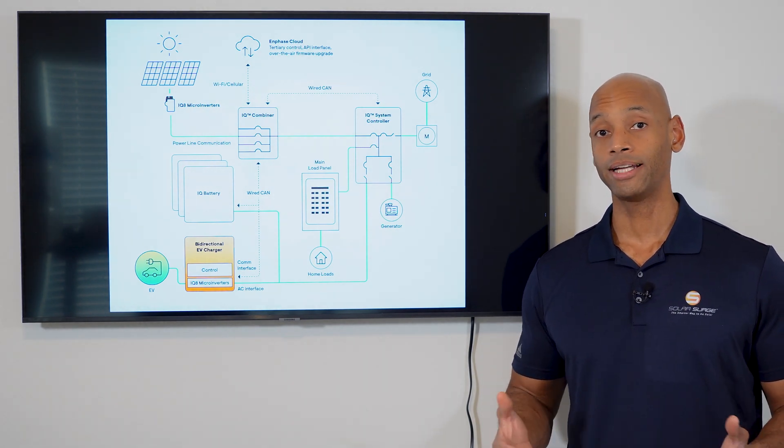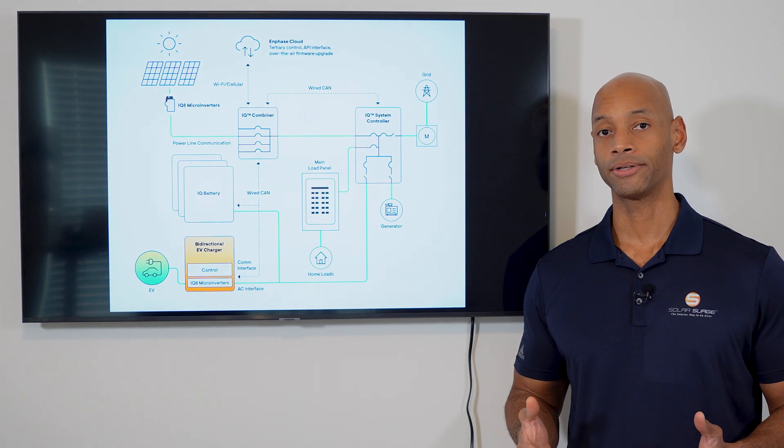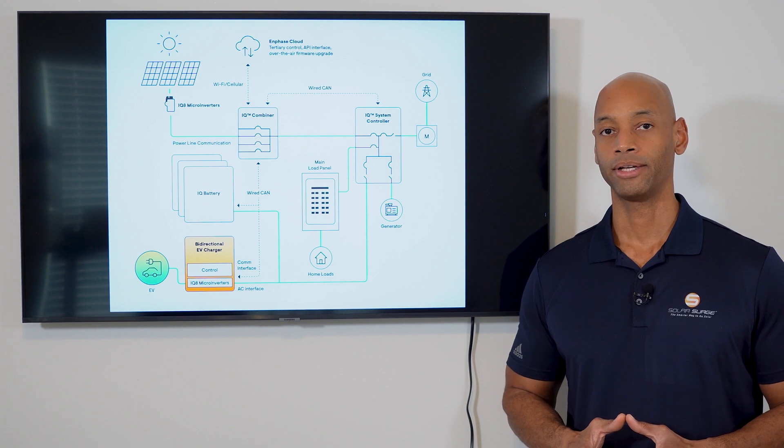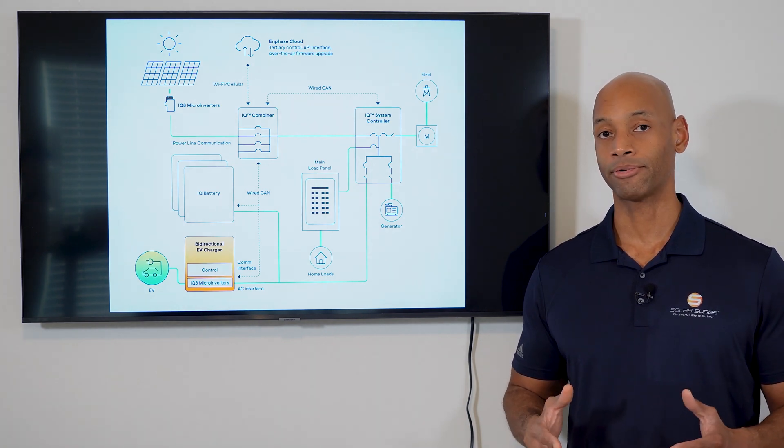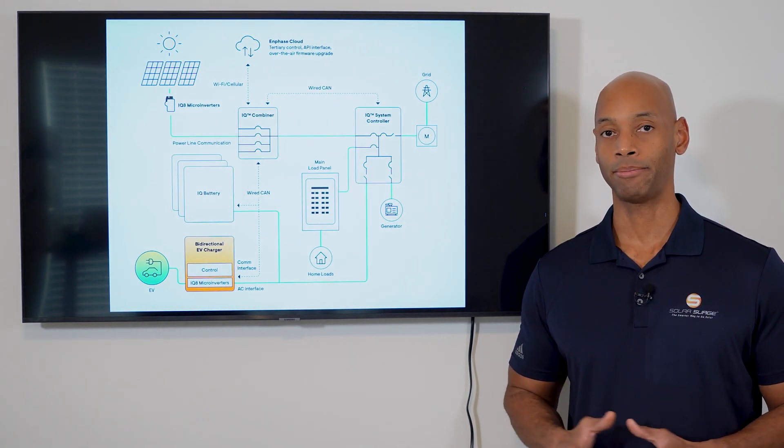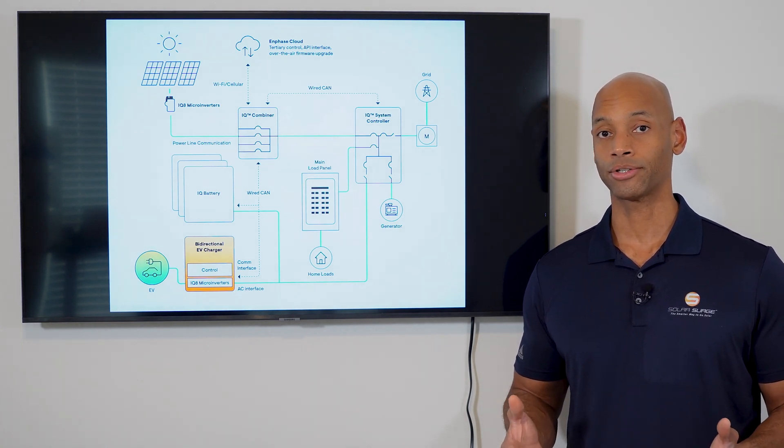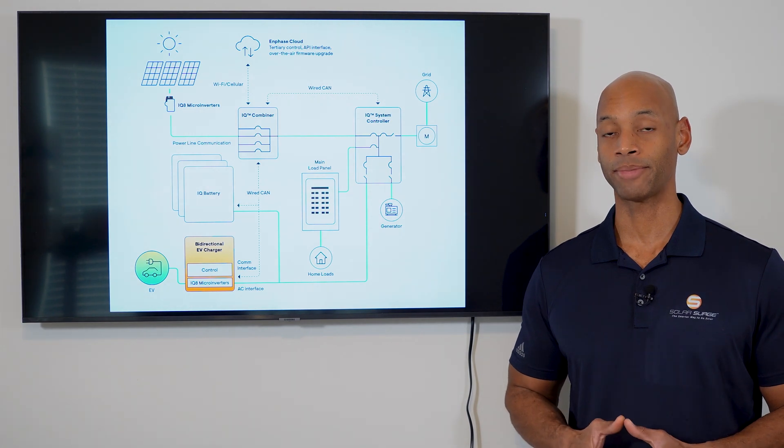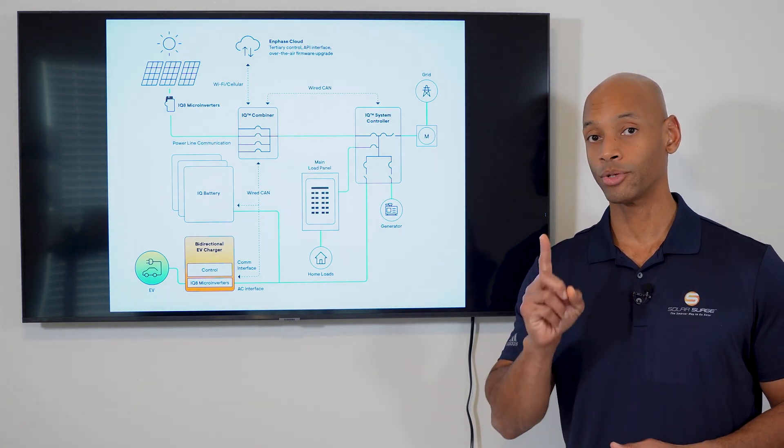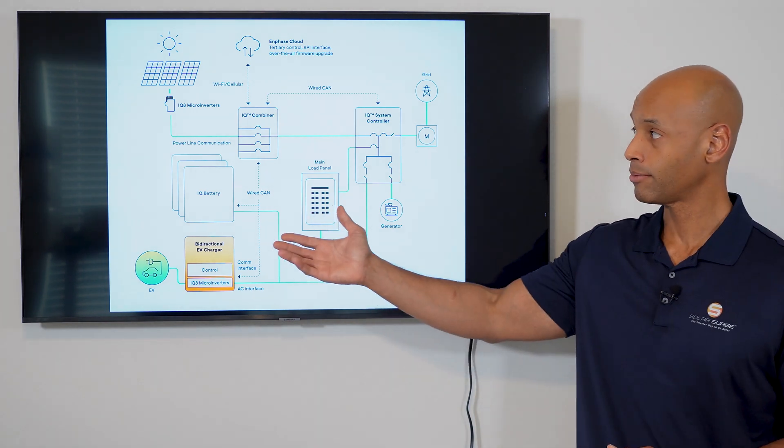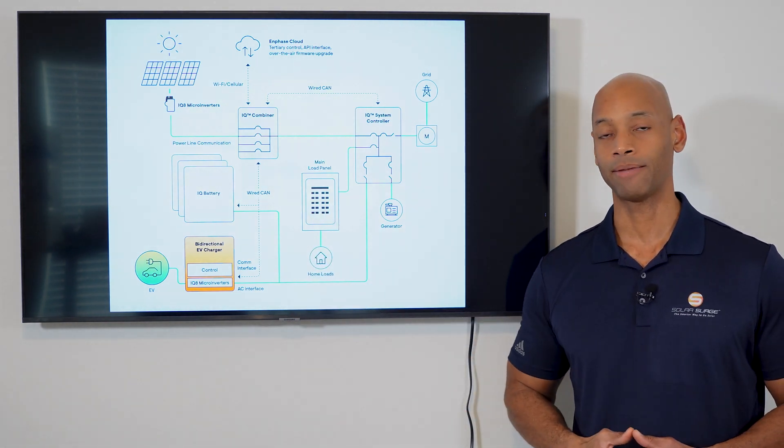The advantage of the microinverter architecture is that it eliminates any potential central point of failure. Each solar panel can operate independently as its own independent power station. So if there ever was damage to one of your solar panels or if one malfunctioned, the power loss would only be limited to that single panel only. The rest of the system would continue to operate at max power.